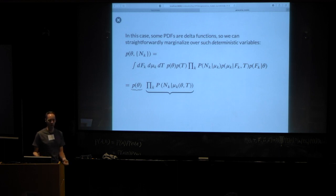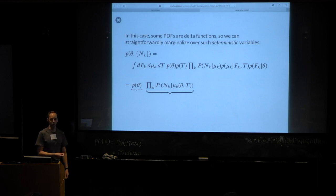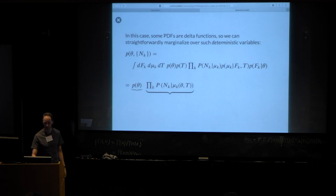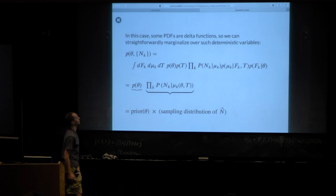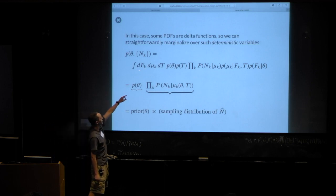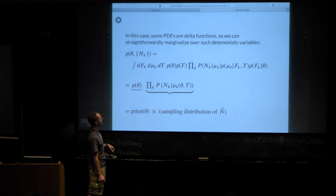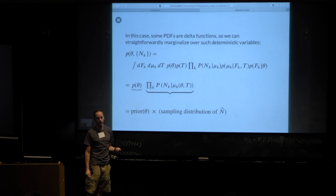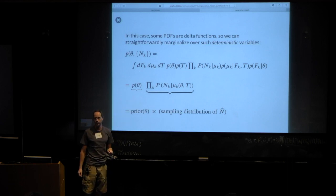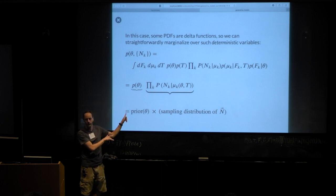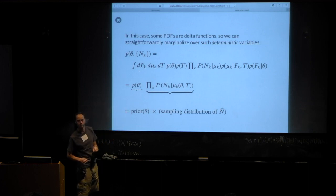Every time you simplify in this way it's an opportunity to forget to do something later. However, it has the advantage of making explicit that what we have is the prior times the likelihood — the sampling distribution for the data.